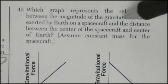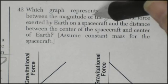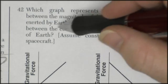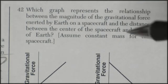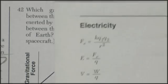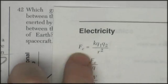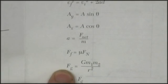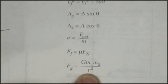Question 42, which graph represents the relationship between the magnitude of the gravitational force exerted by the Earth on a spacecraft and the distance between the center of the spacecraft and the center of the Earth? This is the gravitational equation formula. F equals, no, that's electricity. It's the same one mechanics. F equals G M1 M2 over R squared.